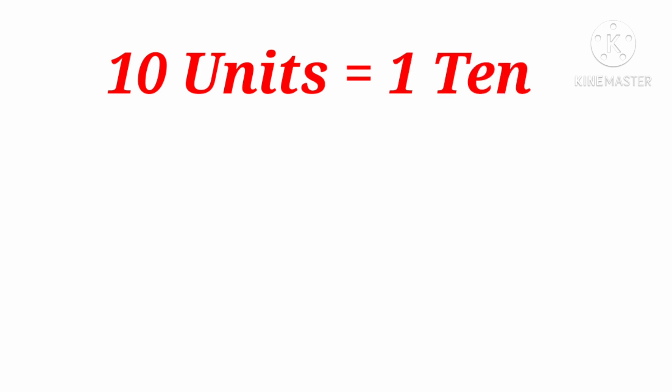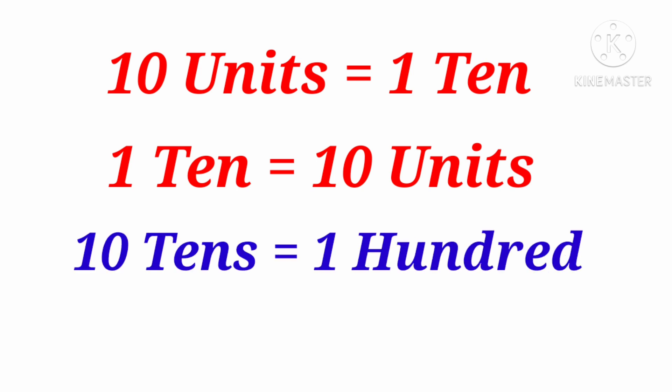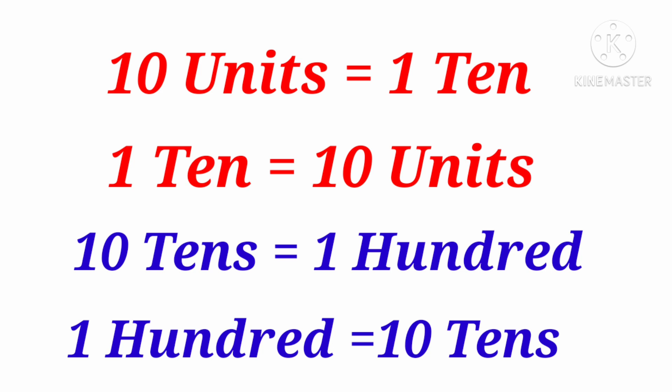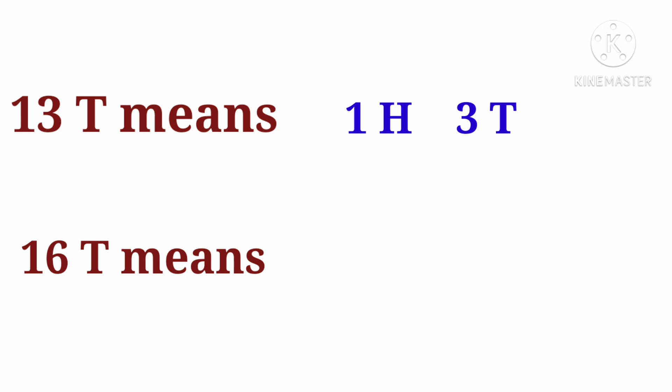So students, today we learned that 10 units is equal to 1 ten, or 1 ten is equal to 10 units, and 10 tens is equal to 100. Now, 100 is equal to 10 tens. For example, 13 tens means 100 and 3 tens, and 16 tens means 100 and 6 tens.